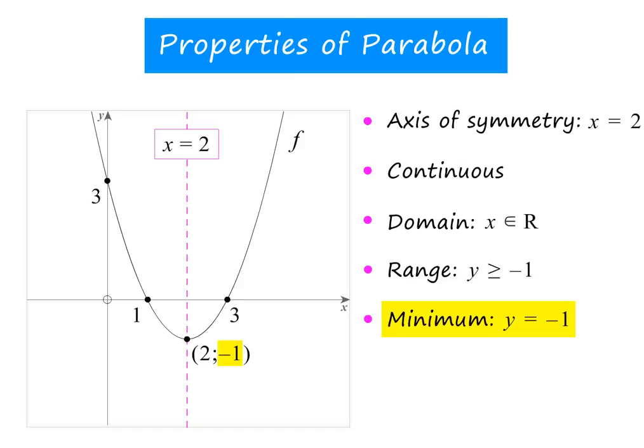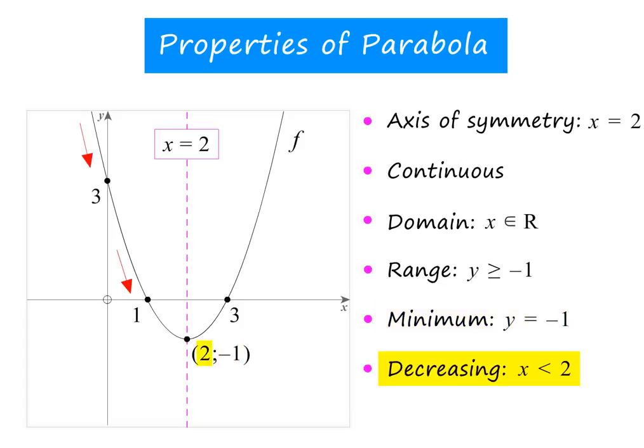We can therefore say that this parabola has a minimum value of minus 1. The y-coordinate of the turning point gives this value, and it is a minimum value because the arms of the parabola go up. The parabola is decreasing in the interval x less than 2,